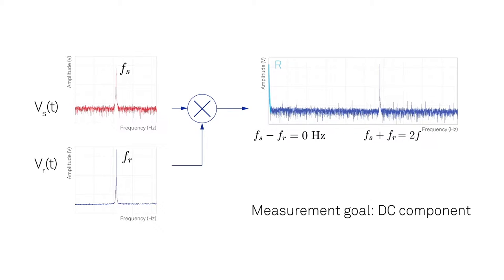After mixing, the lock-in amplifier separates the DC component from the 2F part by means of an adjustable low-pass filter. Main characteristics are the bandwidth and filter order.